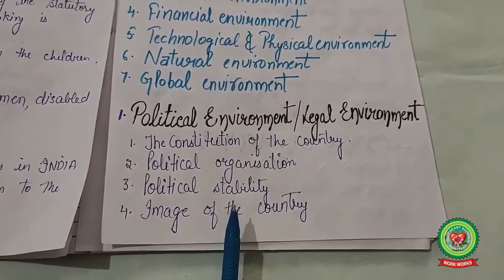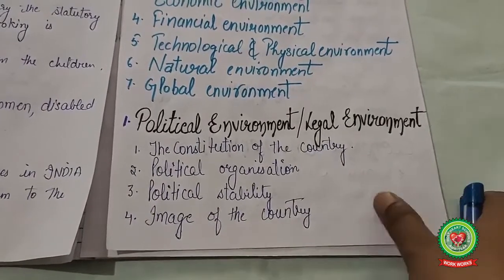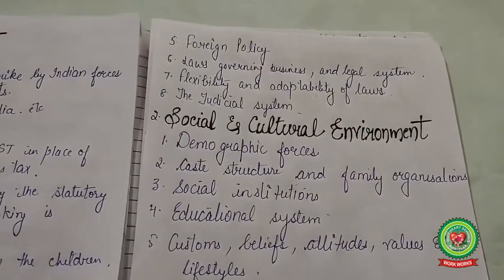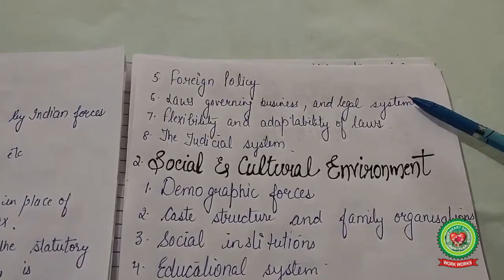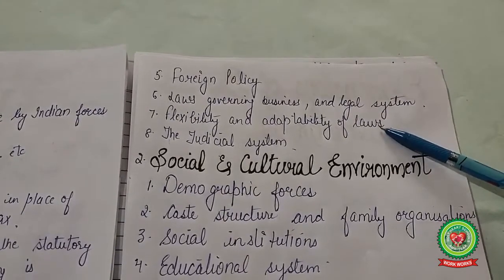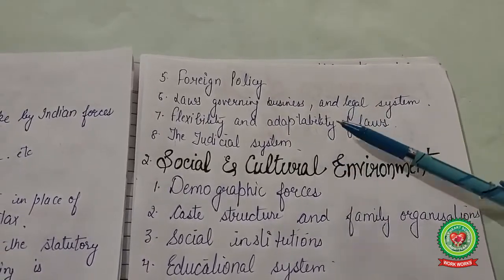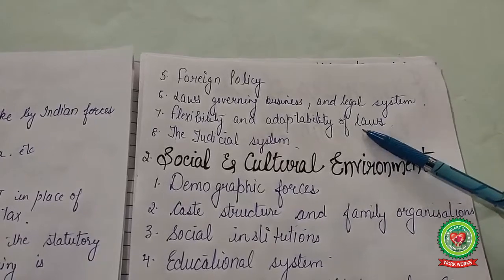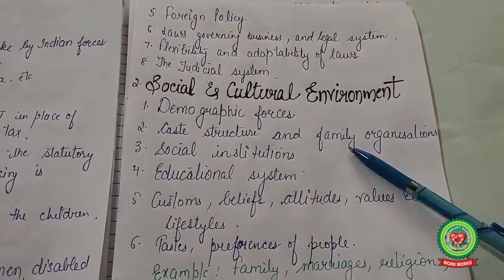The political environment also includes the image of the country and its leaders, foreign policy and relations with foreign countries, laws governing business and the legal system followed in the country, flexibility and adaptability of laws, and the judicial system — which helps provide a stable political environment conducive to economic activity.